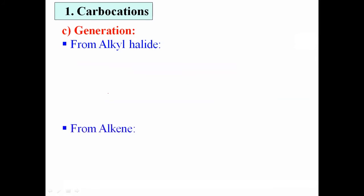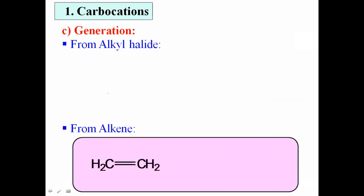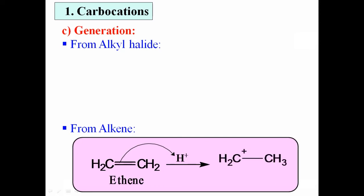The second method is from alkenes. For example, with ethene (CH2=CH2), when this molecule comes in contact with H+ ion, the pi bond between the two carbon atoms undergoes breaking and a new bond forms between one carbon and hydrogen — this is called protonation. The hydrogen adds to one carbon, while the second carbon acquires a positive charge, forming a positively charged carbon species — the carbocation.